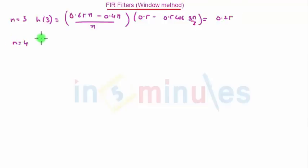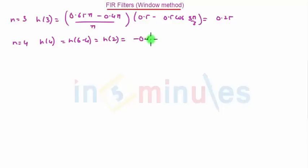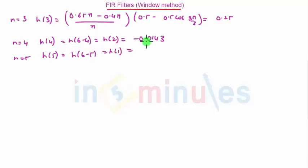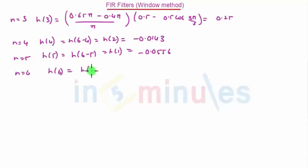When n is equal to 4, h(4) is given by the symmetry property as h(6−4), that is h(2), which is minus 0.0143. When n is equal to 5, h(5) is given as h(6−5), that is h(1), so it will be minus 0.0556. When n is equal to 6, h(6) is given as h(6−6), that is h(0), which will be 0.